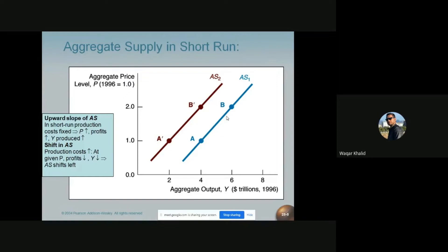So we can conclude that the aggregate supply curve shifts to the left when the cost of production increases and to the right when the cost of production decreases.